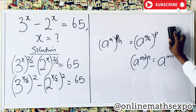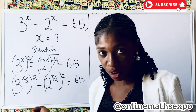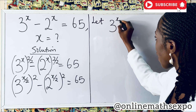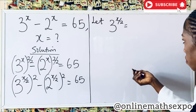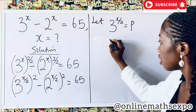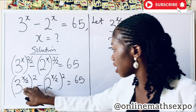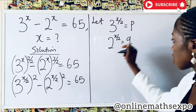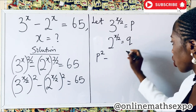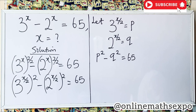What we do next is let the values inside be new variables to reduce the work. Let 3 to the power of x over 2 equal p, and 2 to the power of x over 2 equal q. So we replace 3^(x/2) with p and raise it to the power of 2, and replace 2^(x/2) with q and raise it to the power of 2. So we have p squared minus q squared equals 65.